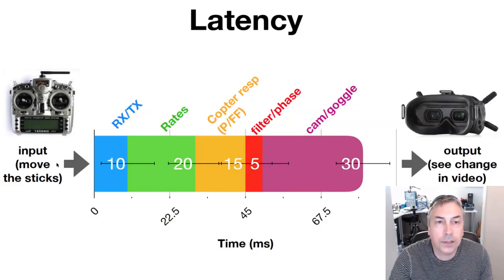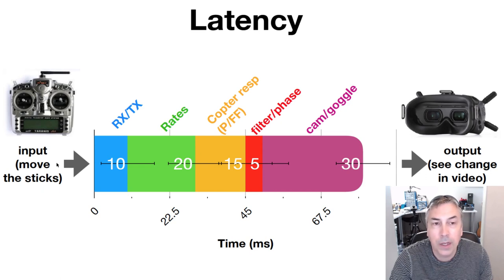In this video Michael and I discuss the components of latency in FPV. We take a deep dive into filter latency and phase delay, and address the issue of why too much filtering can be a really bad thing — specifically how adding just a few milliseconds of filter latency can result in really poor flight performance, prop wash, and other oscillations.